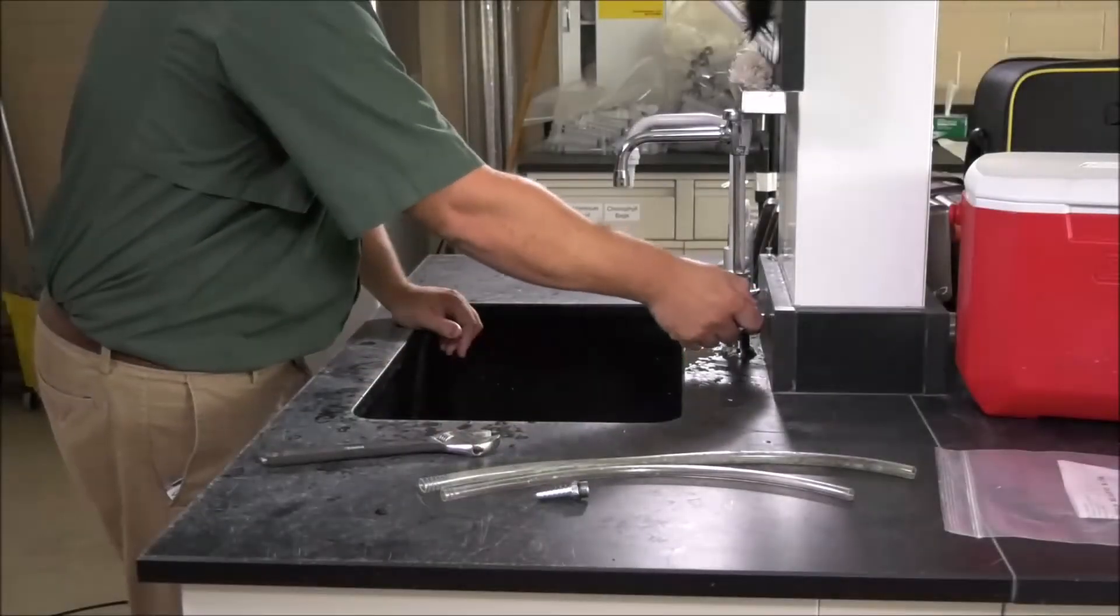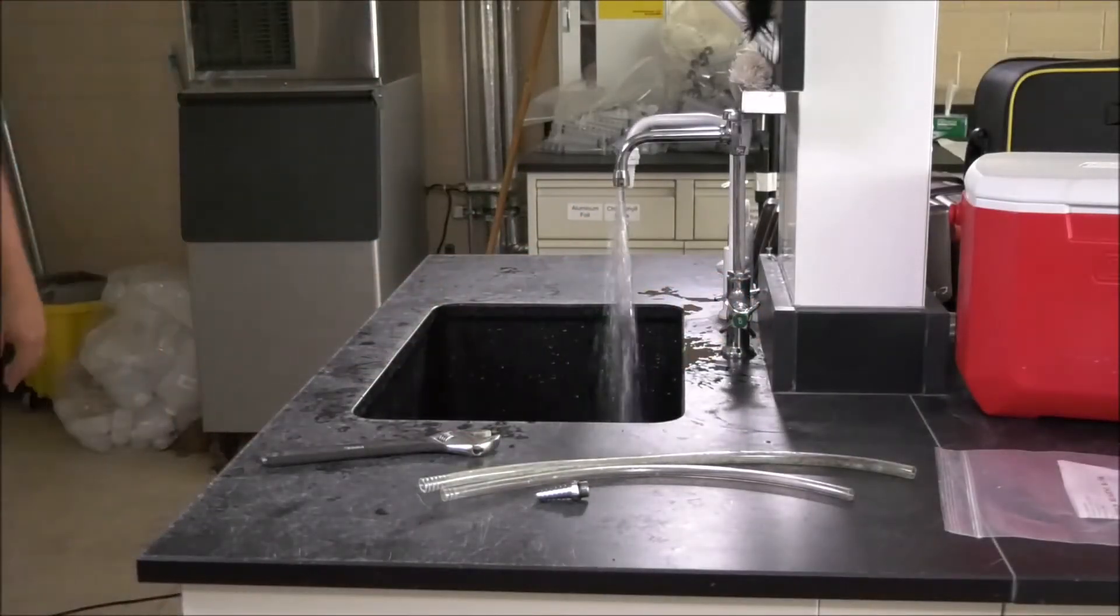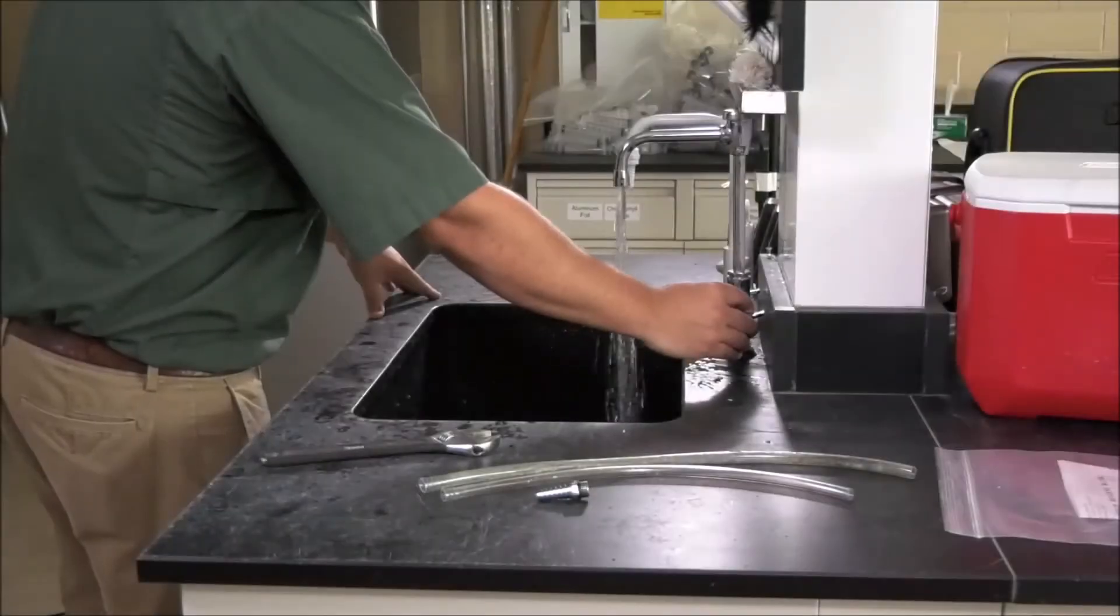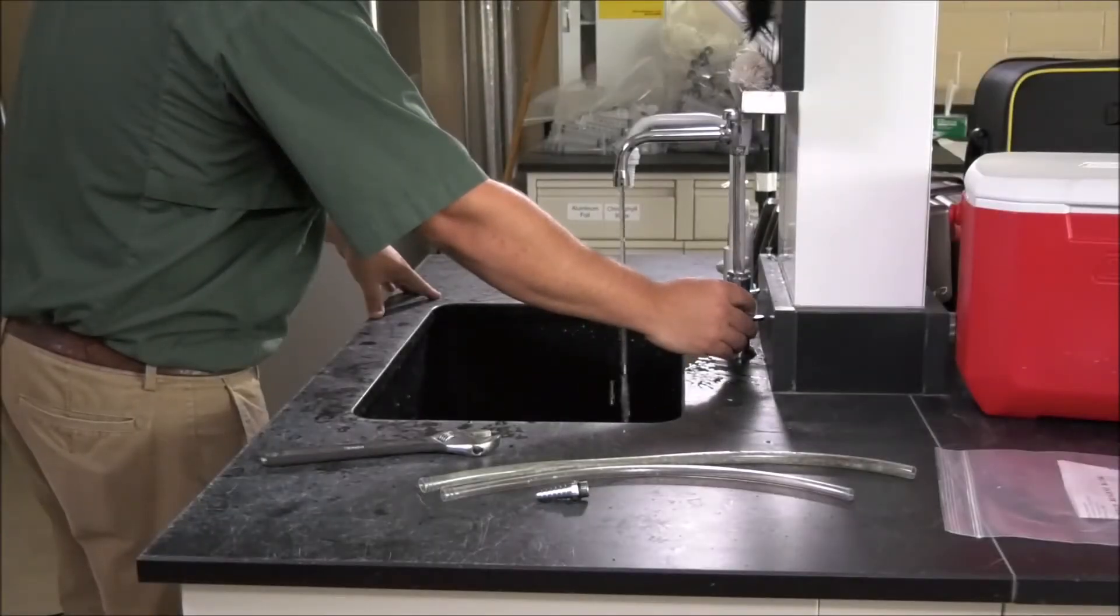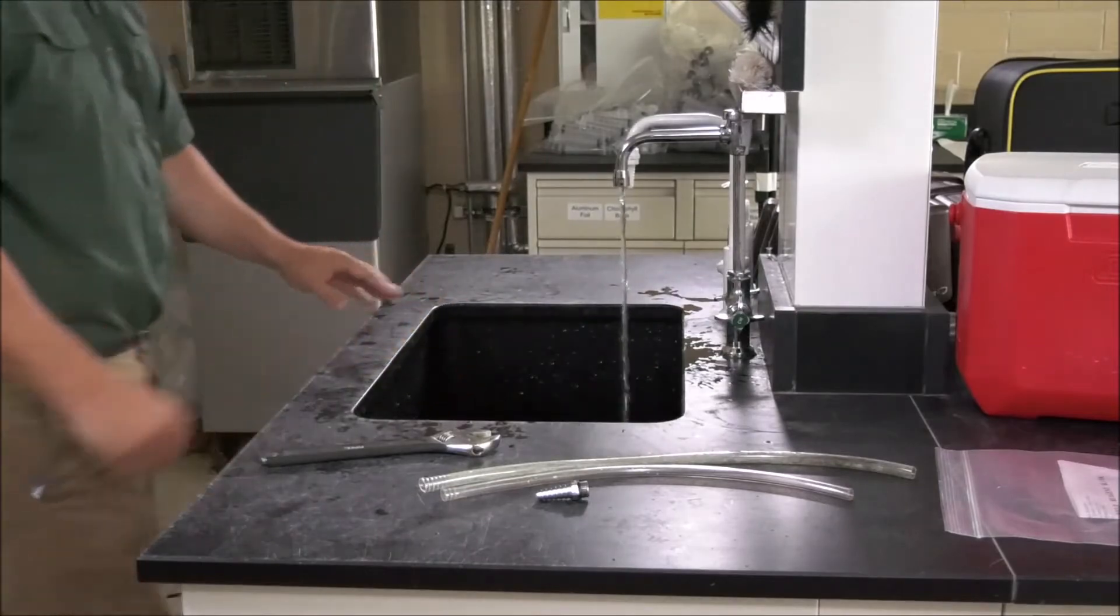Open the tap and let the water run at fast flow for approximately five minutes. After five minutes have passed, slow the water flow to the thickness of a pencil to minimize splashing.